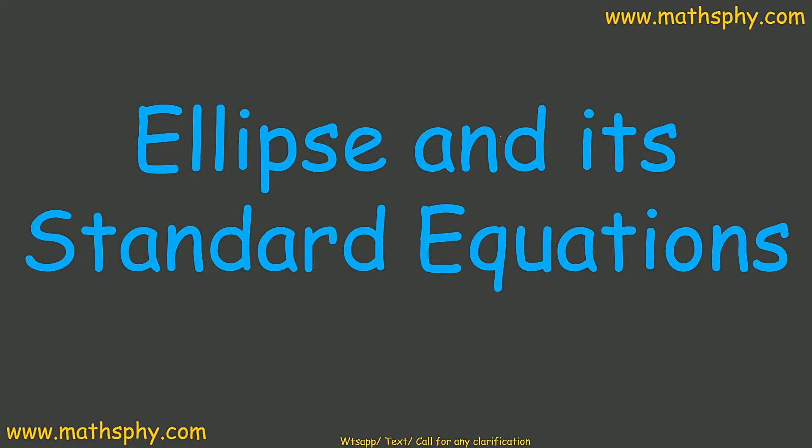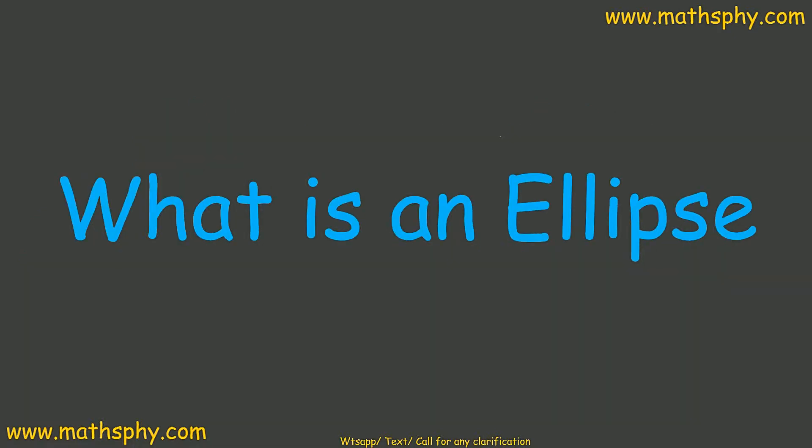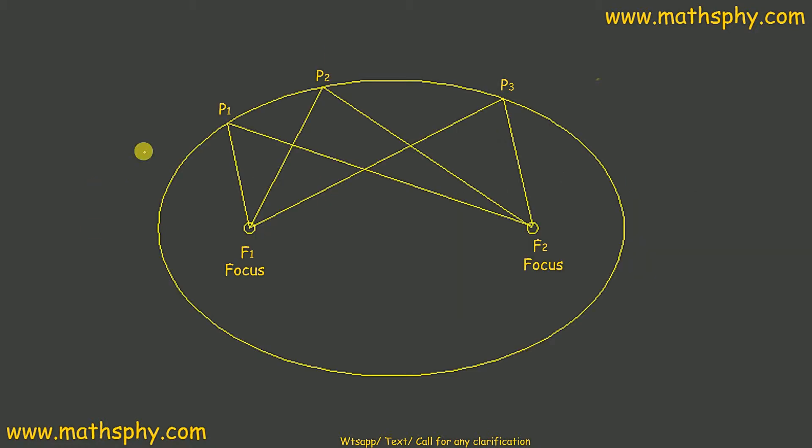This is the third diagram into conic sections. We started off with circle, then we saw a parabola, and now it's time to study about ellipse. We'll get to know about ellipse and its standard equations. First of all, let's try to see what an ellipse is — it looks like this.